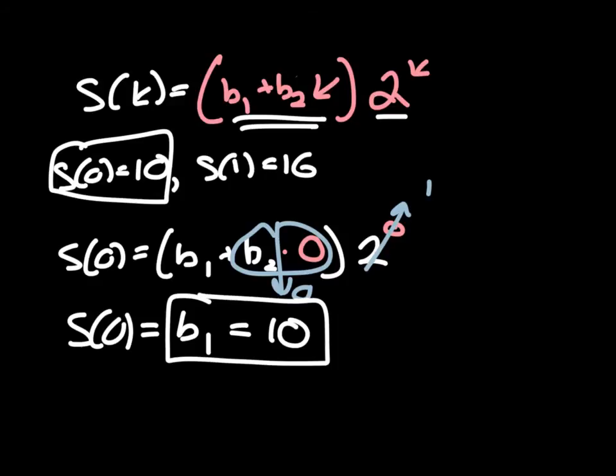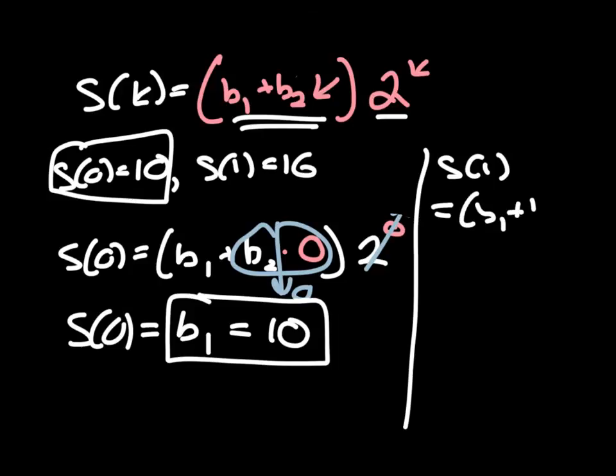Now let's see how we can find the b₂, and we're going to do that using the other initial condition. I'm going to clear out just a little bit of room here by erasing some of the markings. Now if I use the other initial condition, I'll do this right here, that is going to say that S(1), if I plug 1 in for k, I get b₁ + b₂(1) times 2^1. That is equal to 2b₁ + 2b₂. And all that's supposed to equal 16, like so. So this is equal to 16.